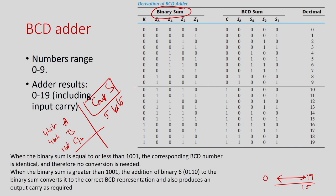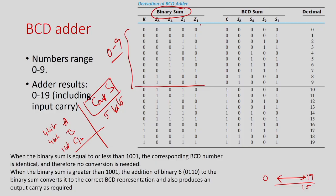When the result is 0 to 9, it is exactly what we expect in BCD — no correction needed. For example, 2+3, 3+3, 4+2, 1+7 — in those cases the results are within the BCD range. The problem happens whenever the value is from 10 to 19. In that case, the data is not a valid BCD number and I need to convert these values into BCD form.